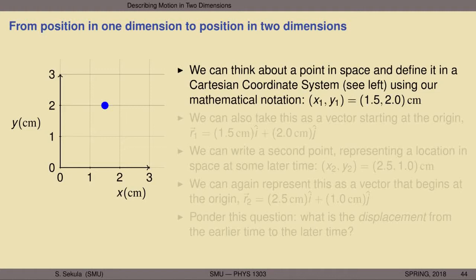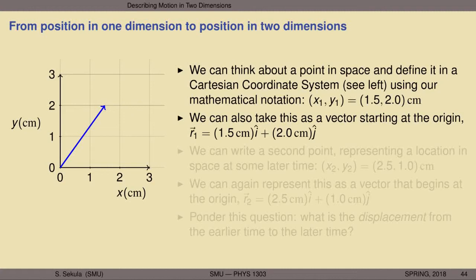We can go back to the vector concept and just as easily represent this point in space as part of a vector. The vector begins at the origin of the coordinate system and extends until its arrowhead reaches the point (1.5, 2). We write this vector in two dimensions using the letter R with a subscript 1 to indicate the first position, and of course we put the vector arrow over the top of the R.